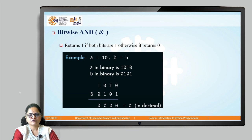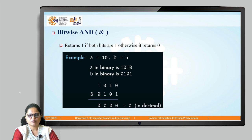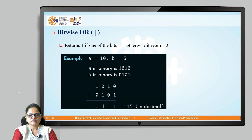To perform this operation, first we need to convert our numbers into binary, perform the AND operation, and then we get the result in decimal. This process is automatically done in the background, so no need to worry about it. But internally, it converts the decimal digits into binary, performs the bitwise AND operation, and gives the result back in decimal.